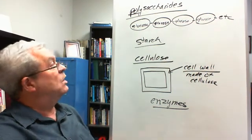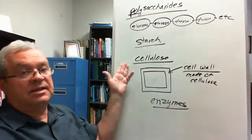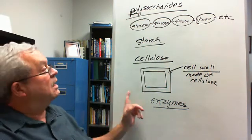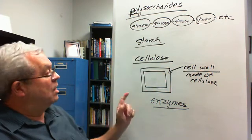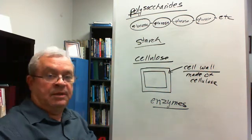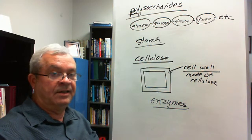Why can we digest starch but not cellulose? Because we have the enzymes in the pipeline that will take apart starch. We do not have the enzymes in the pipeline that will take apart cellulose. That is the difference.